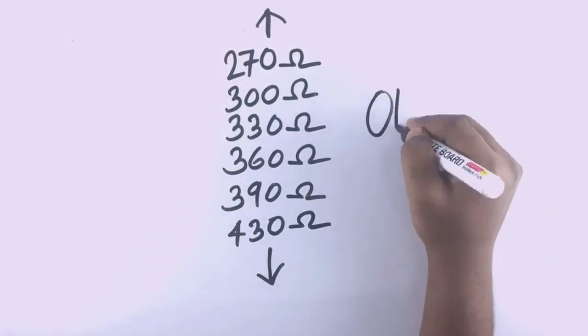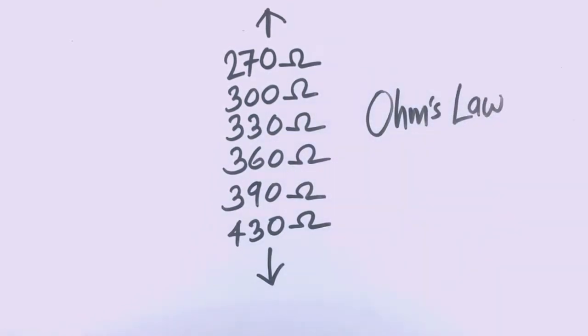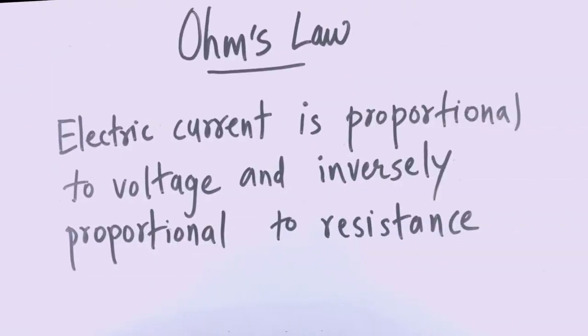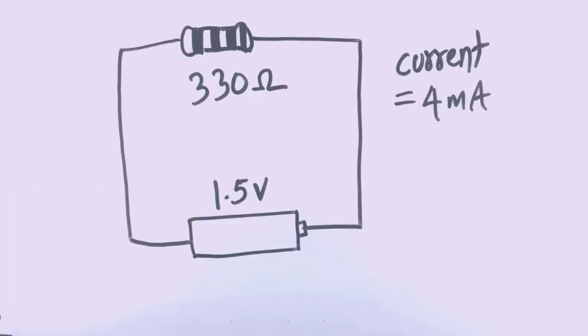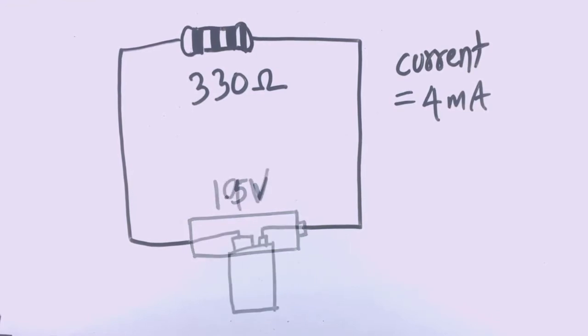Before going into all the calculations, we will take a look at what the law states. The law states that electric current is proportional to voltage and inversely proportional to resistance. That means in this circuit, if we increase the voltage by replacing this with this, the current will also increase. But if we replace this resistor with a bigger one, the current will decrease.